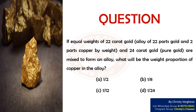In this video, let us discuss a question on ratio of copper in gold alloy. If equal weights of 22 carat gold, which is an alloy of 22 parts gold and 2 parts copper by weight, and 24 carat gold, which is pure gold, are mixed to form an alloy, what will be the weight proportion of copper in the alloy? Options: A) 1/2, B) 1/8, C) 1/12, and D) 1/24.